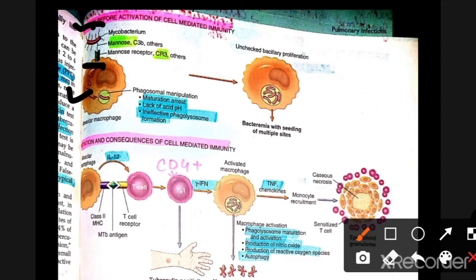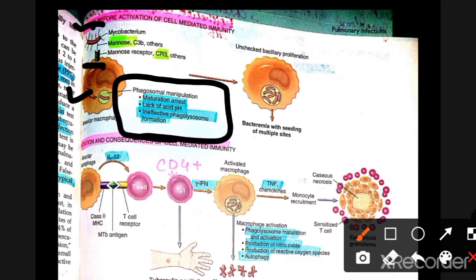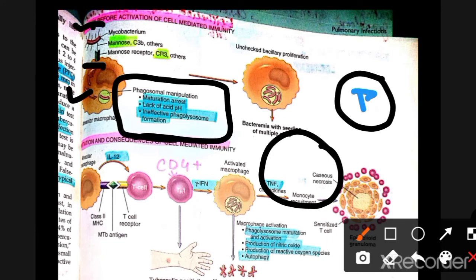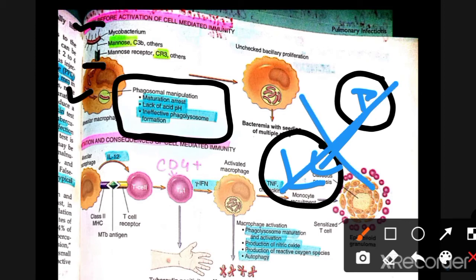Macrophages take up the bacteria through phagocytosis. However, Mycobacterium tuberculosis is very clever — it inhibits phagolysosome formation. Normally, a phagosome fuses with a lysosome to form a phagolysosome. The lysosome contains digestive enzymes and an acidic pH that would kill bacteria.